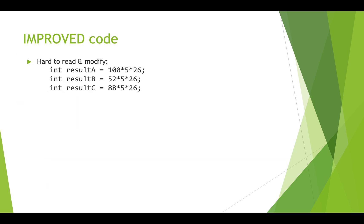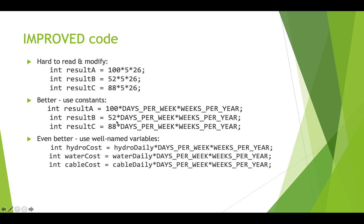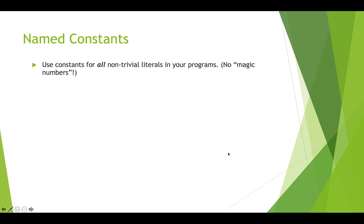Let's go back to the example and look at how we'd improve it. By using constants for `DAYS_PER_WEEK` and `WEEKS_PER_YEAR`, this starts to look more meaningful. We can make it even better by using well-named variables: `hydroCost = hydroDailyCost * DAYS_PER_WEEK * WEEKS_PER_YEAR`, and similarly for `waterCost` and `cableCost`. Now this code is very meaningful because we've got well-named variables and constants. You want to use constants whenever your program requires a specific number that's going to stay the same — you don't want magic numbers because they don't mean anything to people.